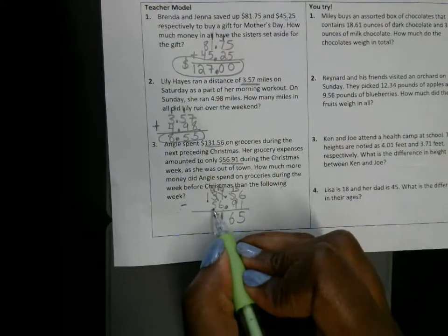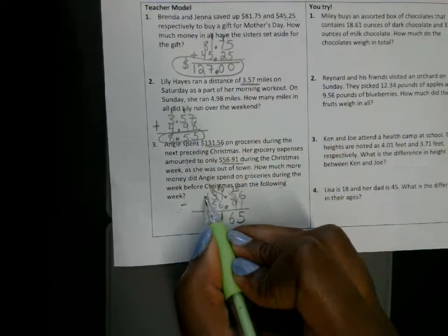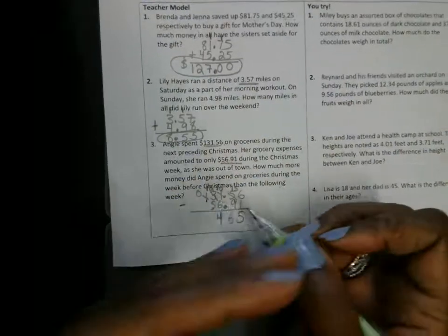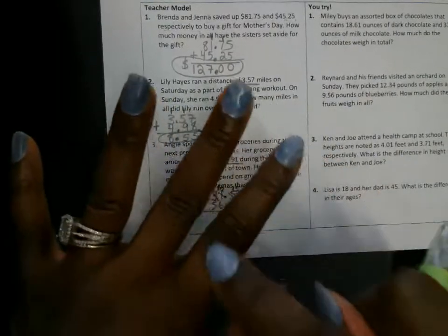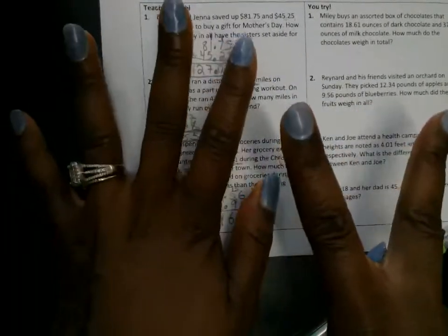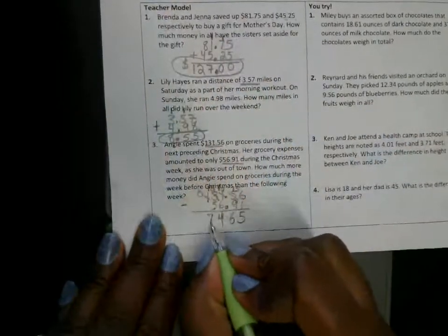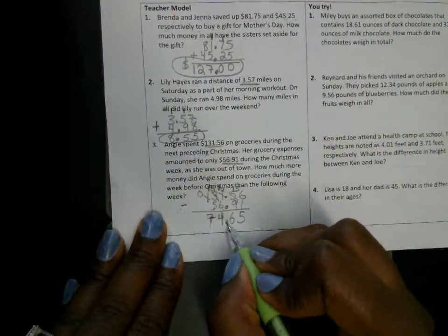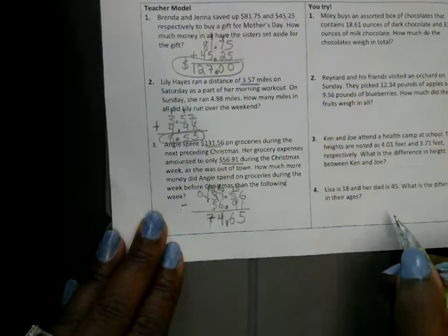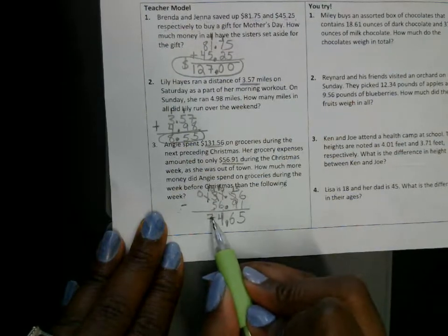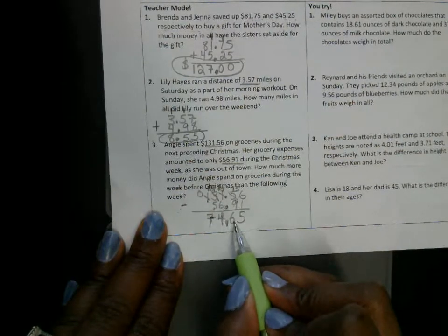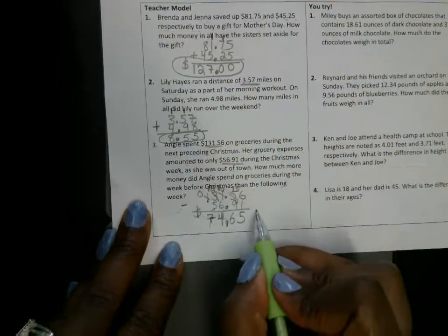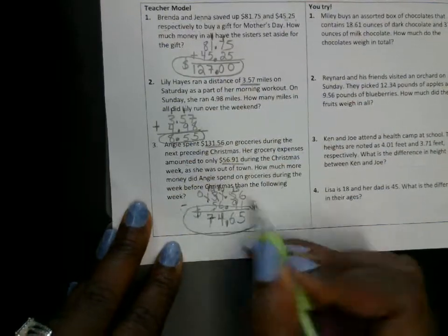We can't subtract five from the two, so this is going to be zero. This is twelve. Let's count again. We got five, six, seven, eight, nine, ten, eleven, twelve. That's seven fingers, right? Last step is to bring down the decimal. So it is seventy four dollars and sixty five cents. That's how much, that's how much more was spent on groceries.